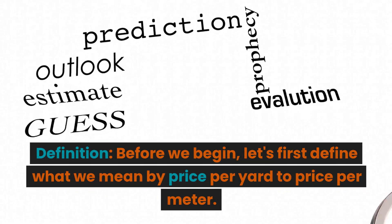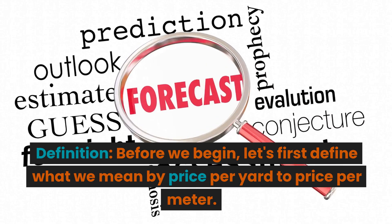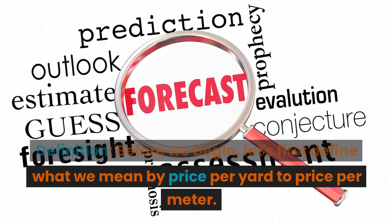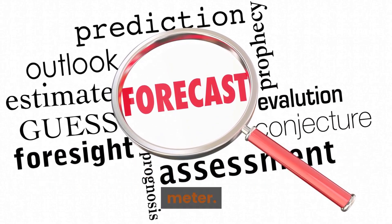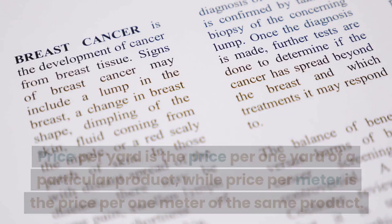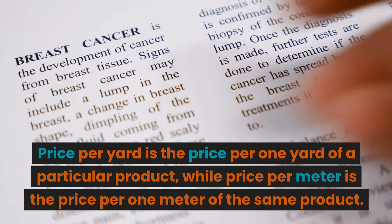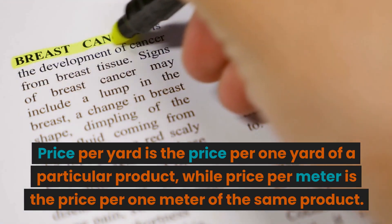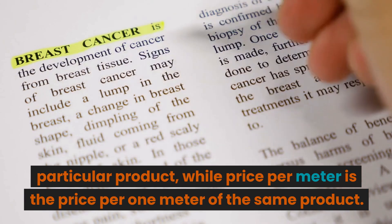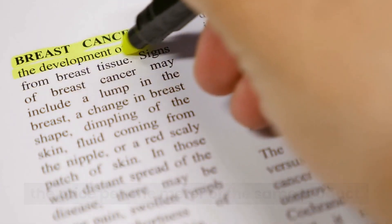Definition. Before we begin, let's first define what we mean by price per yard to price per meter. Price per yard is the price per one yard of a particular product, while price per meter is the price per one meter of the same product.